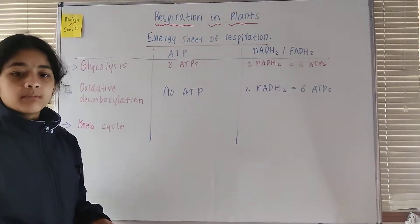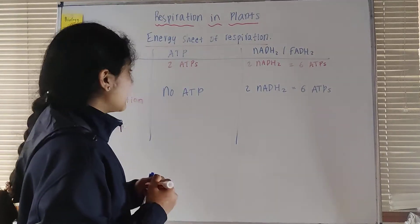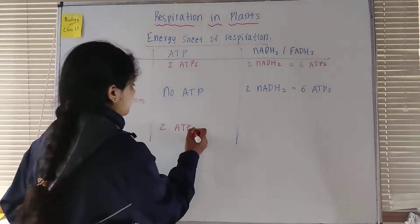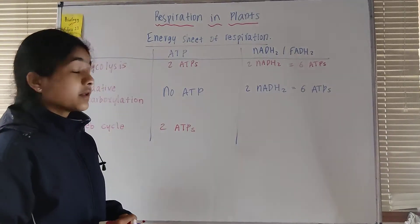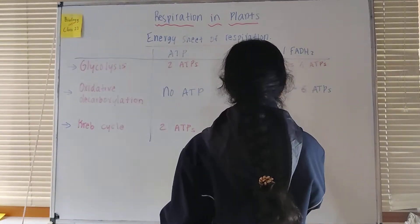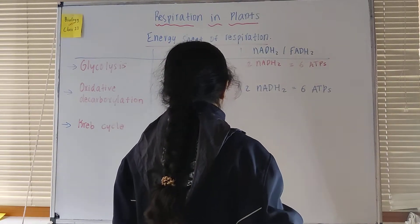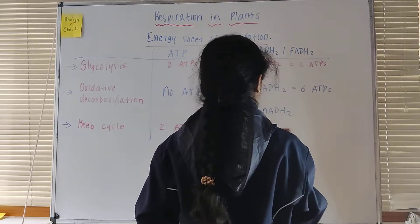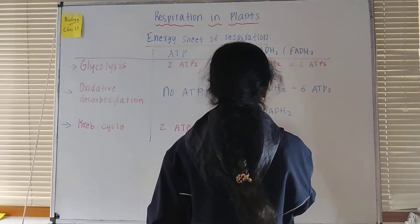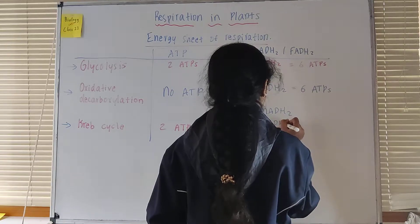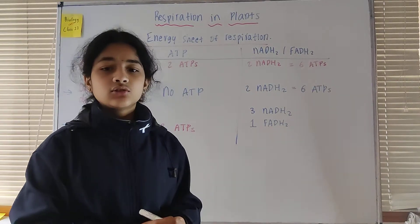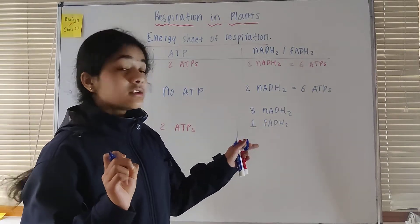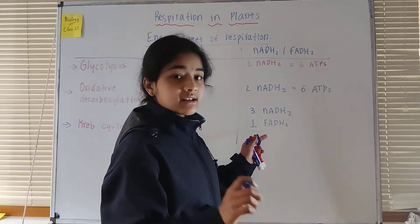Next we have the Krebs cycle. Here two ATPs are directly formed. For NADH2 or FADH2, three NADH2 are formed and one FADH2 is also formed, so both NADH2 and FADH2 are produced in the Krebs cycle.